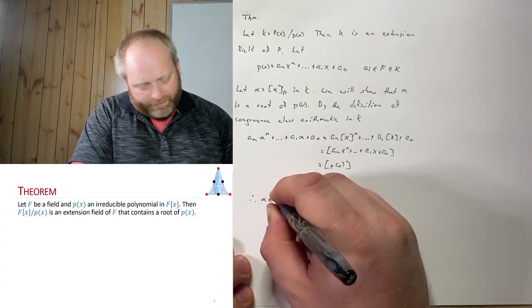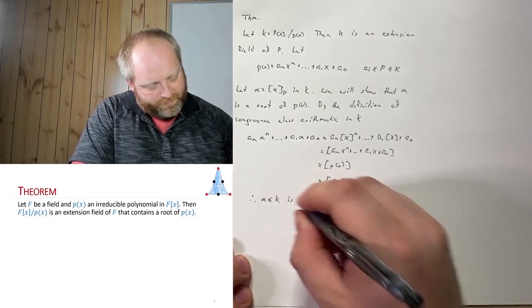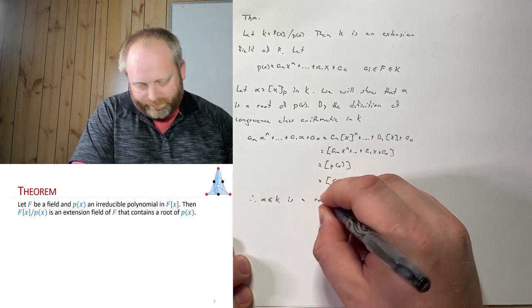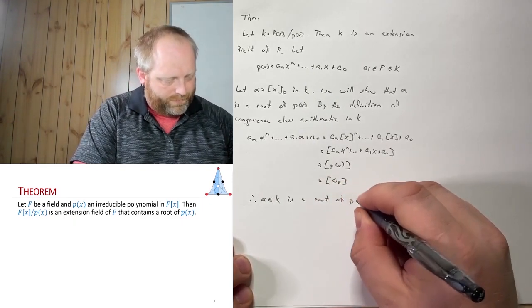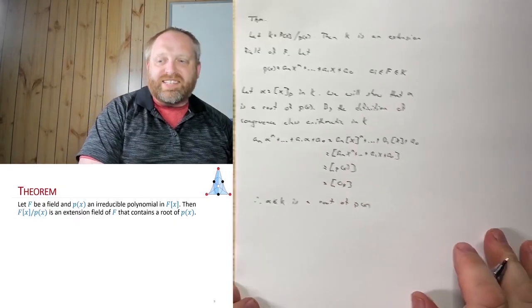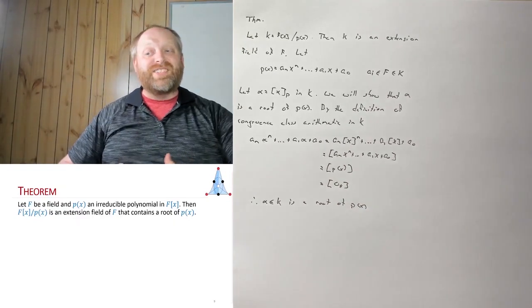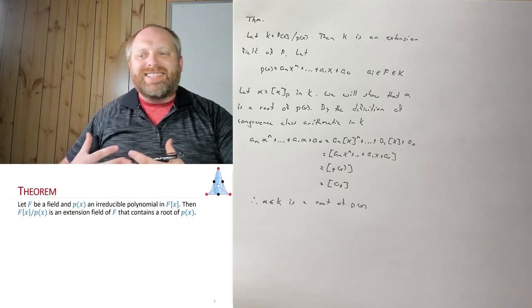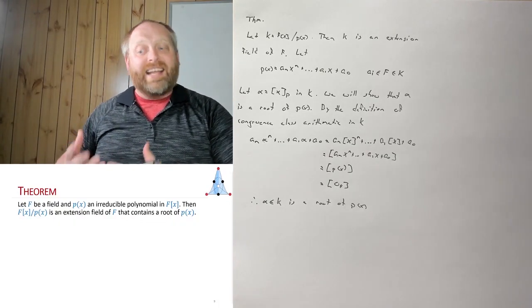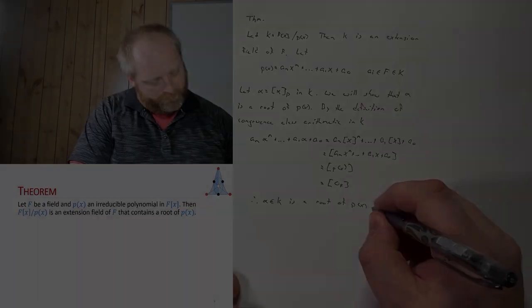alpha an element of K is a root of p(x). So alpha wasn't inside of F, but alpha is inside of K, and alpha is now a root of something that was beforehand irreducible.